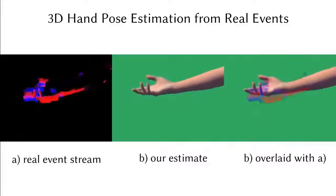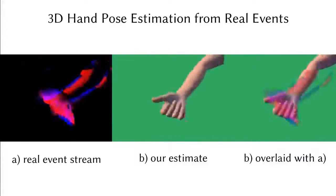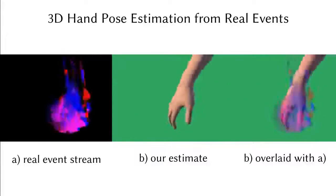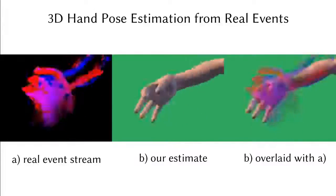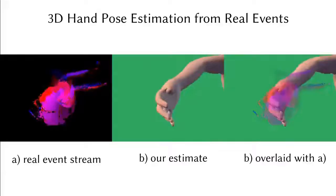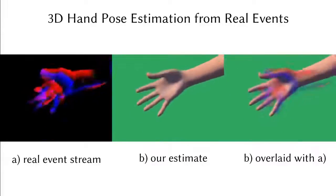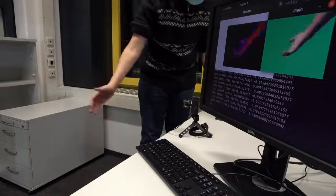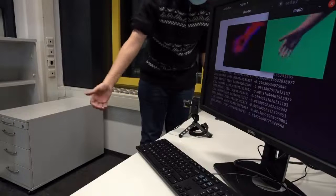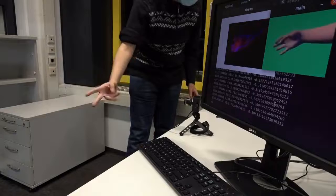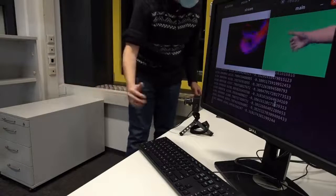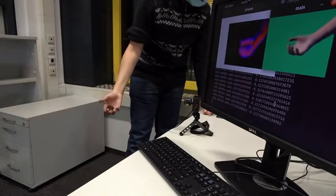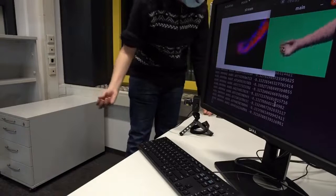Now we show more results of our method, as recorded in a live demo. Event Hands is also robust to outlier events generated by small objects while interacting with a hand, as showcased in this live demo example.